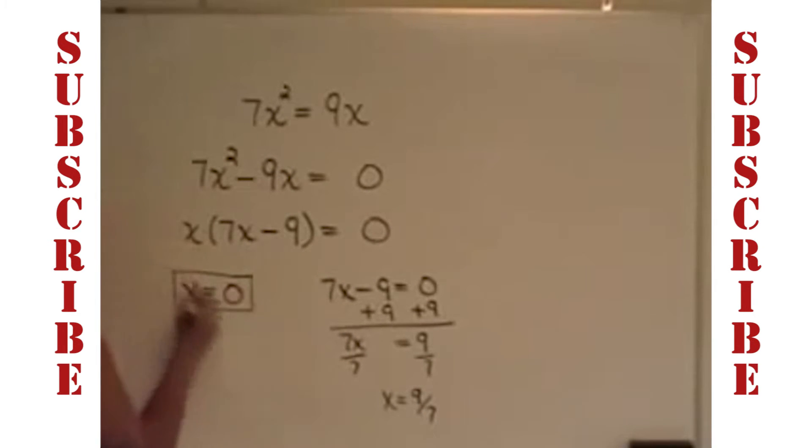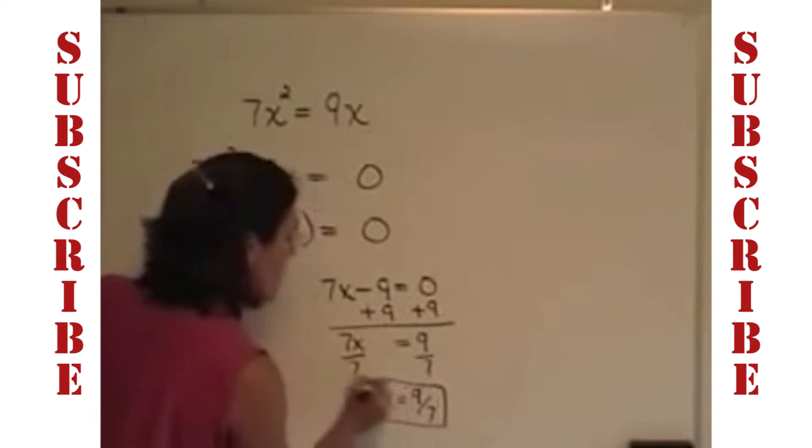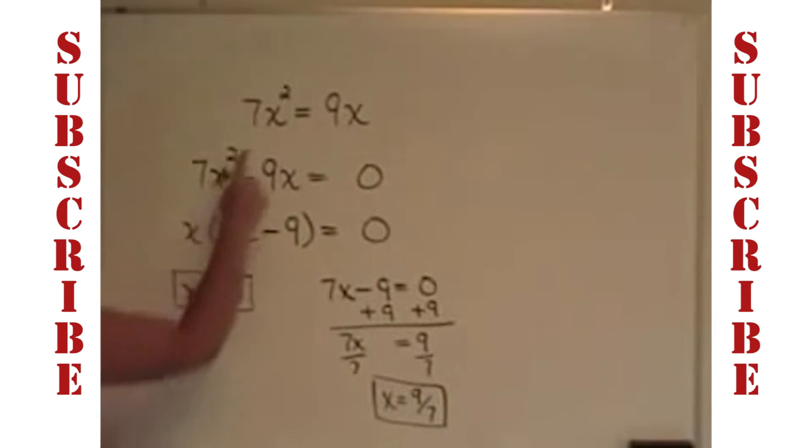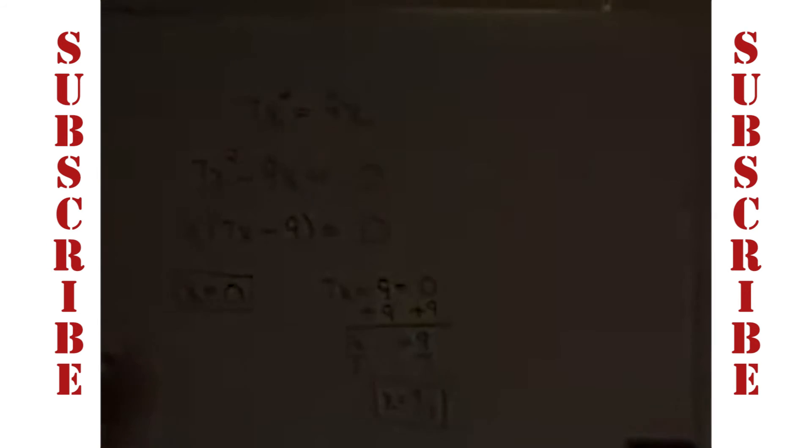So again, this problem has two solutions, x equals 0 and x equals 9 sevenths. You can even look at this and see that the 0 will work quite well in this problem, because when I take 0 and square it, I get 0 times 7 is nothing, and 9 times 0 is 0 as well. Likewise, when I put 9 sevenths and square it into the left side, and 9 sevenths times 9 on the right side, those will check.